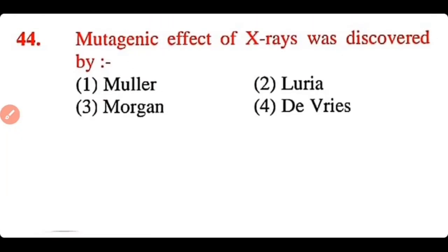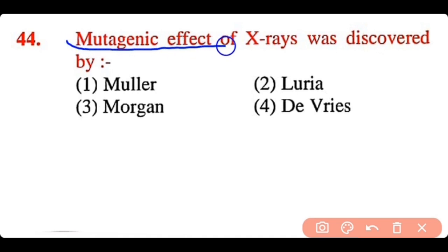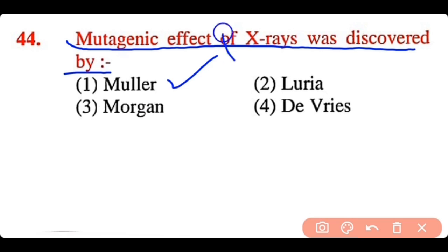Question 44: The mutagenic effect of X-rays was discovered by: Muller, Lauria, Morgan, or Diveries. The correct answer is option 1. Muller discovered the mutagenic effect of X-rays.